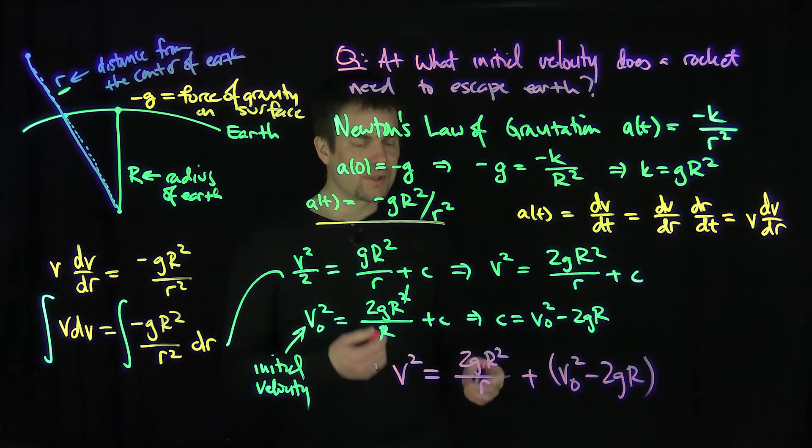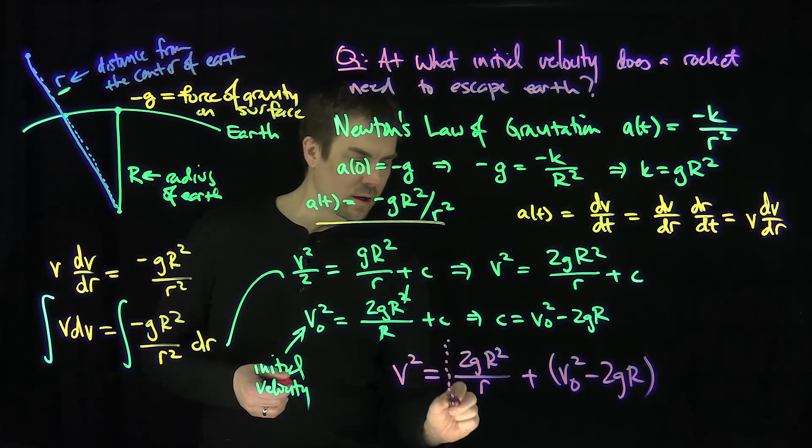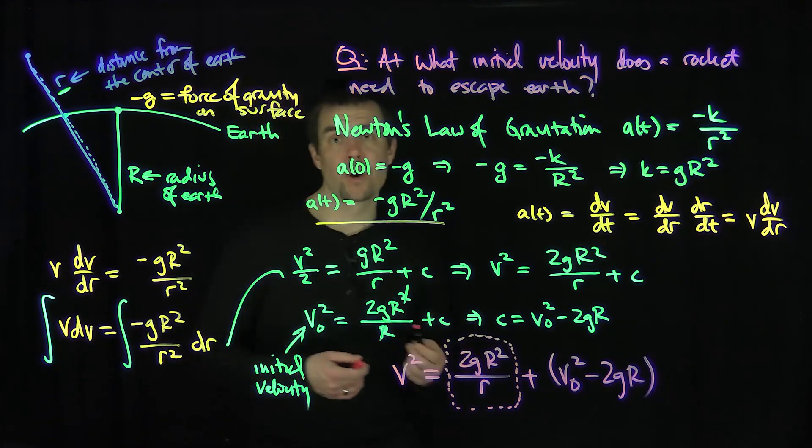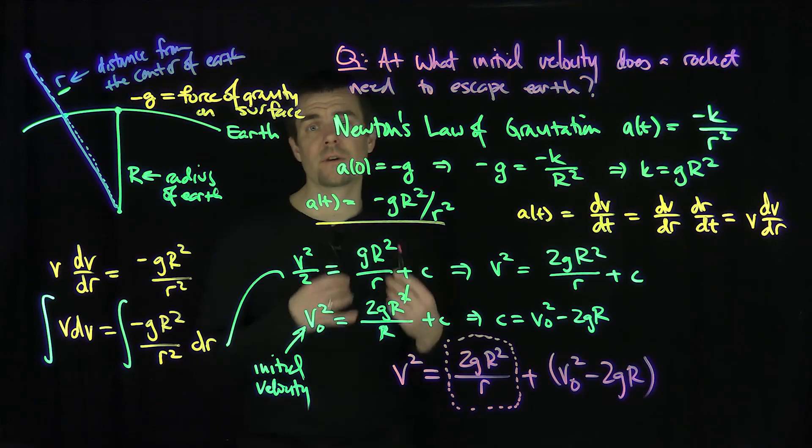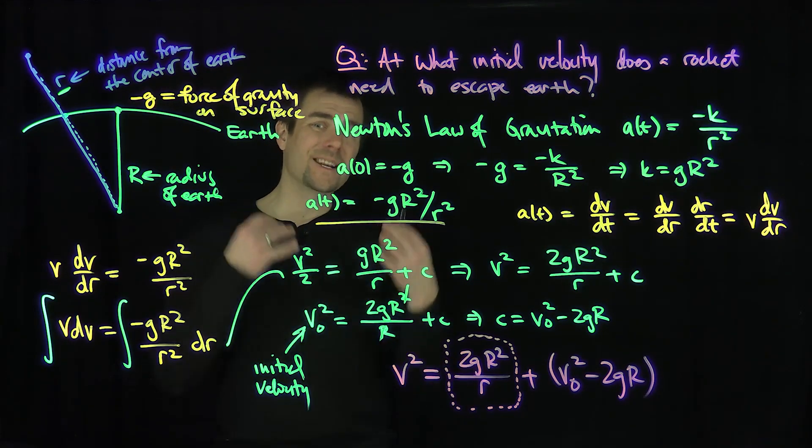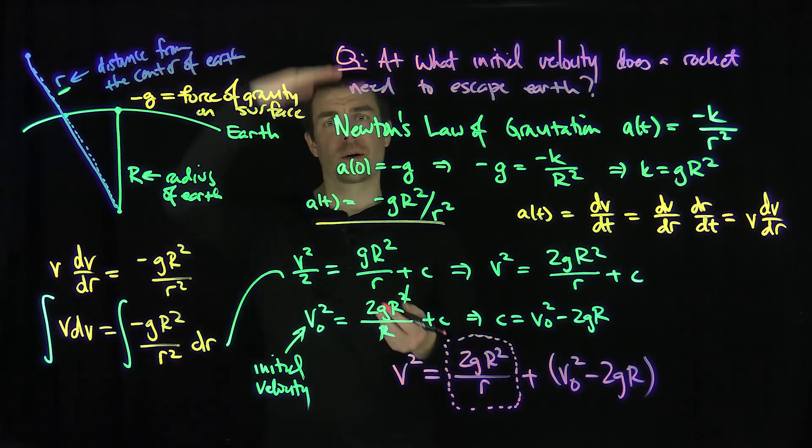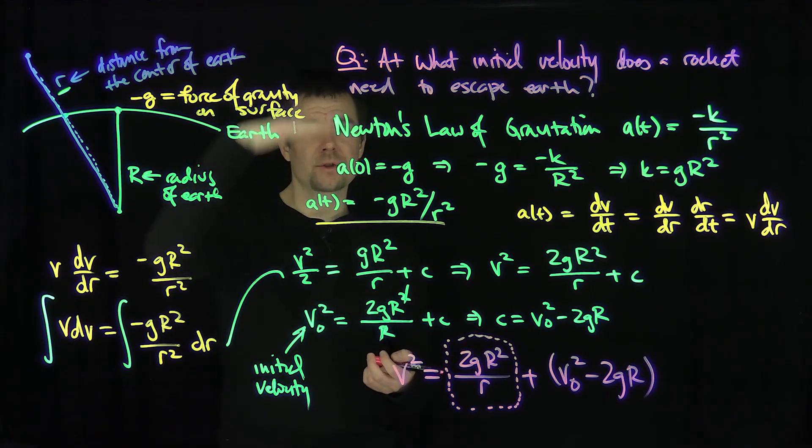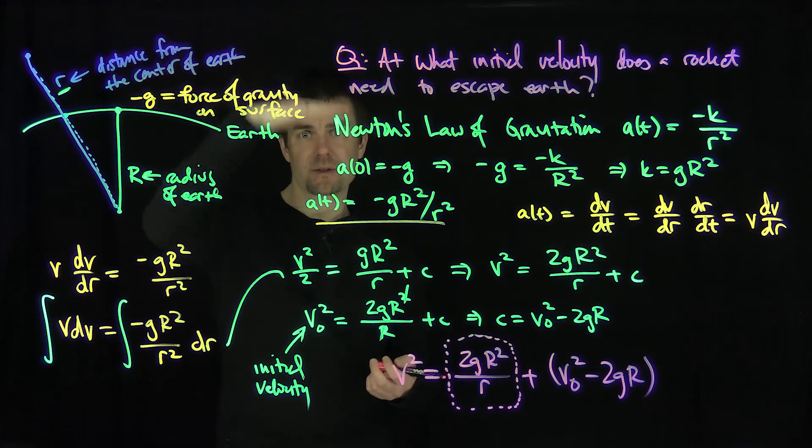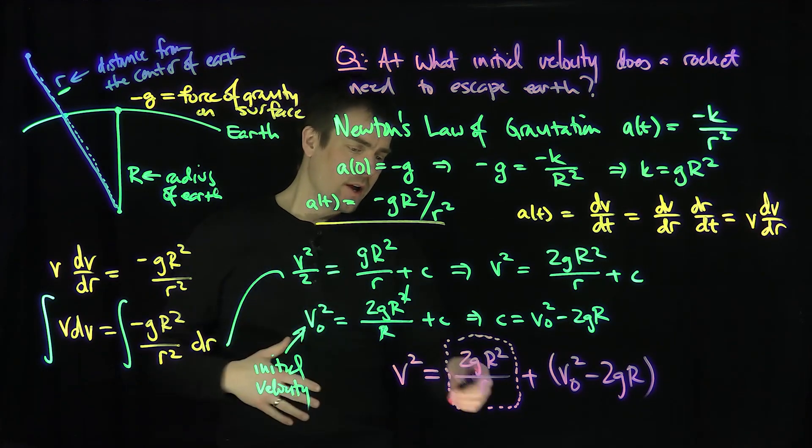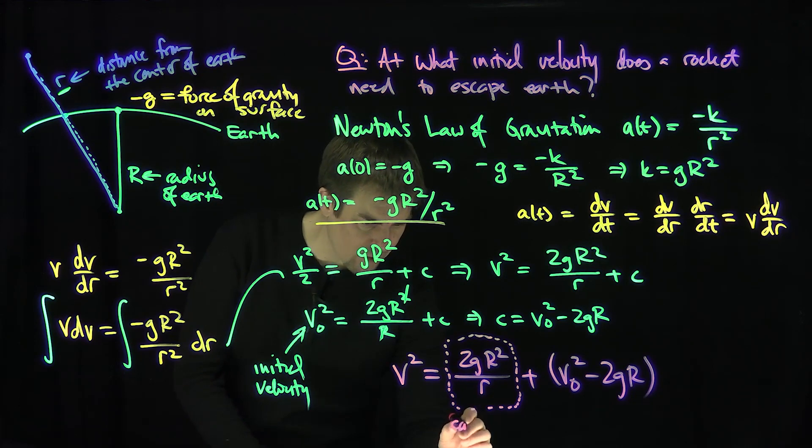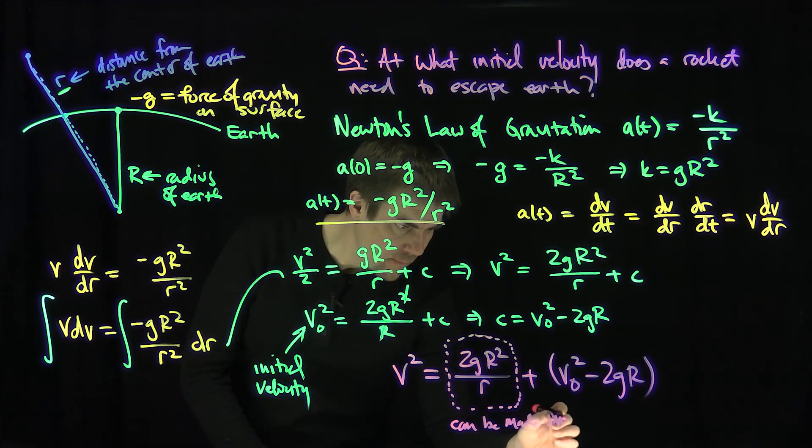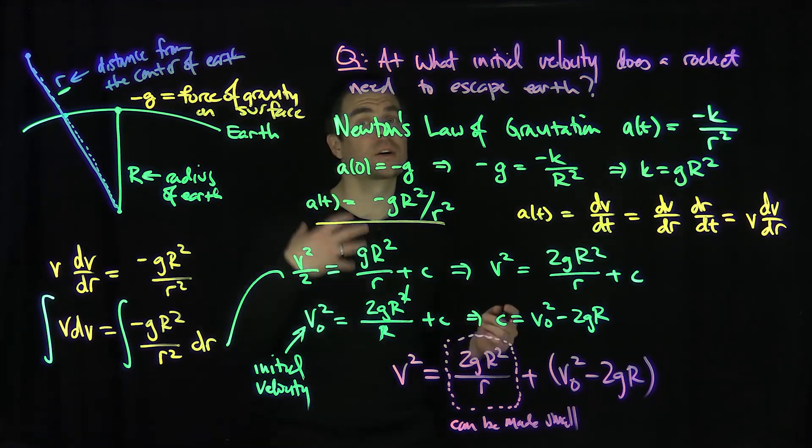And so now from this, we see that this expression, this 2gR capital squared over little r, can be made as small as we wish. As little r gets very, very large, this quantity gets extremely small. So when will my projectile or my rocket start to fall? My rocket will start to fall as soon as the velocity goes from positive to negative, so it has to hit 0. This can be made small by making r extremely large.